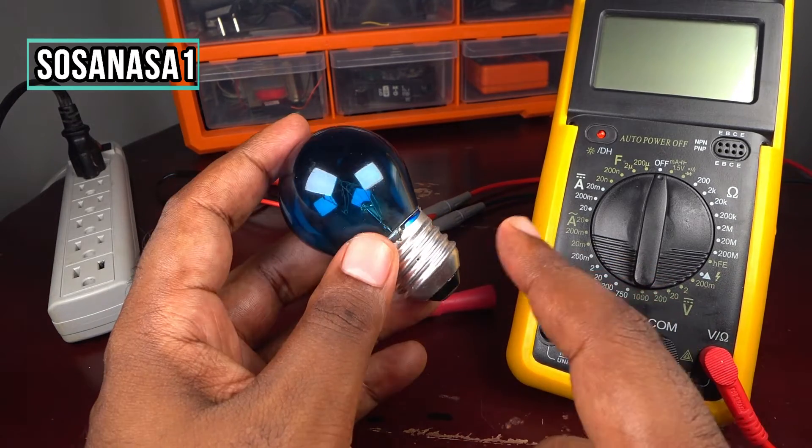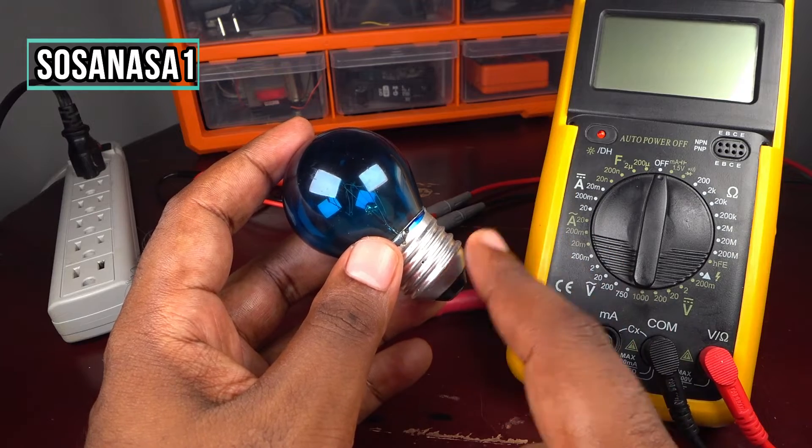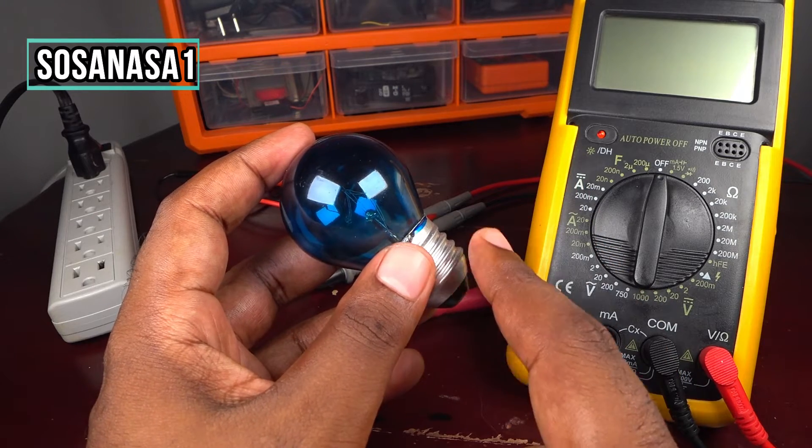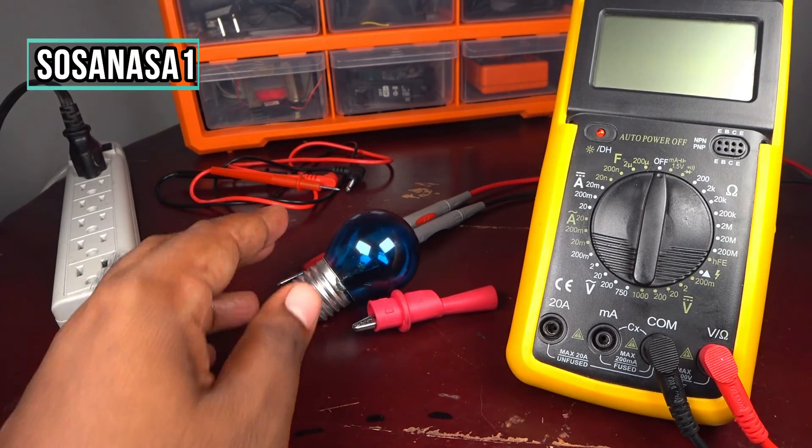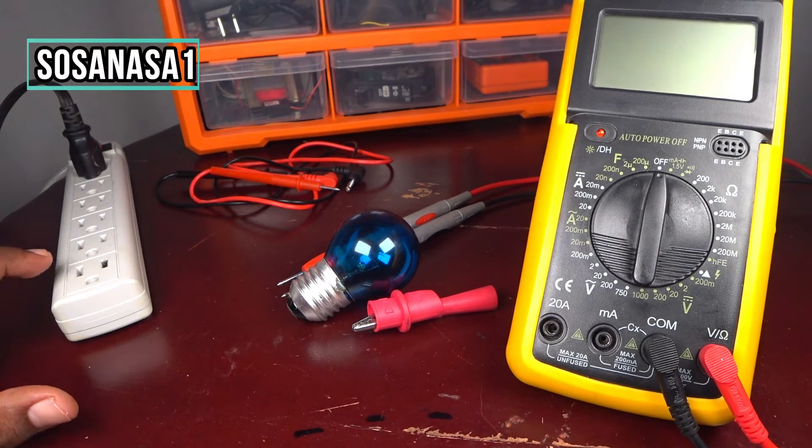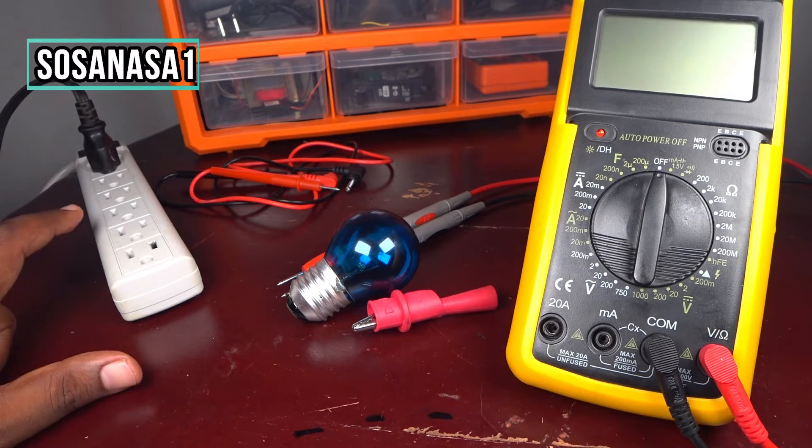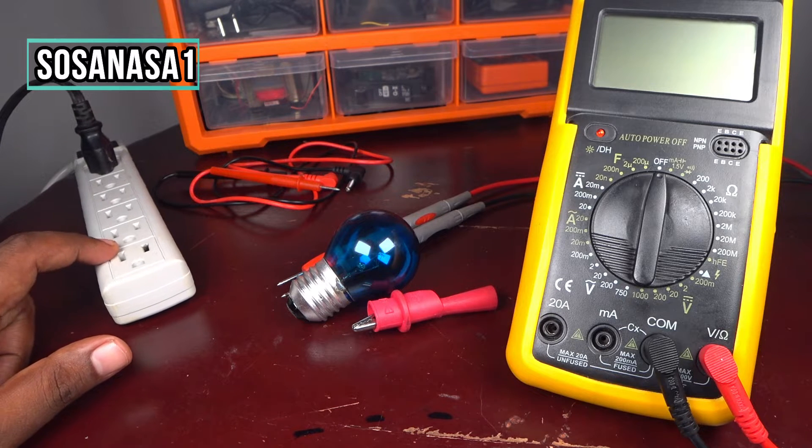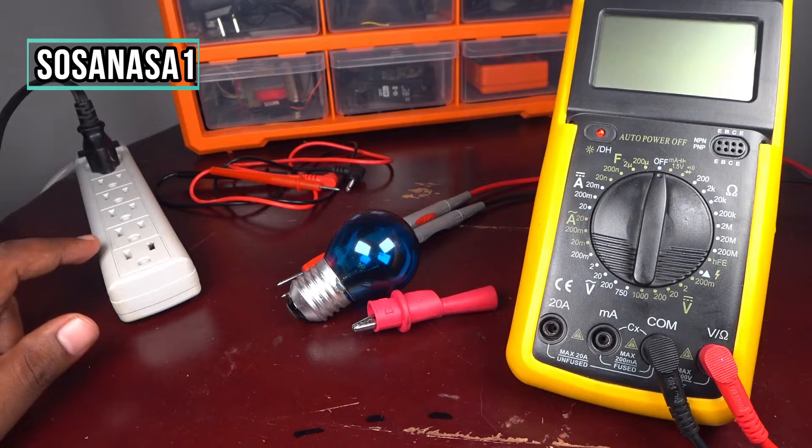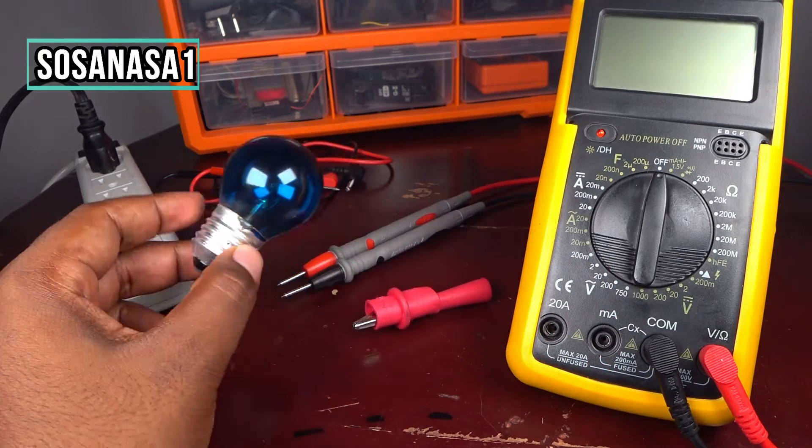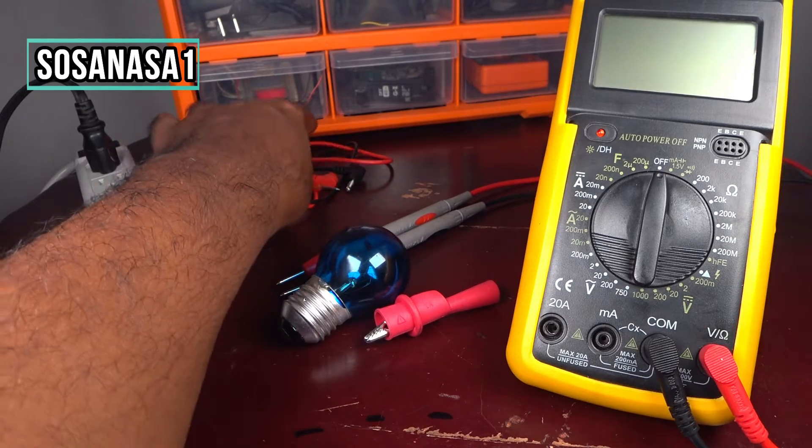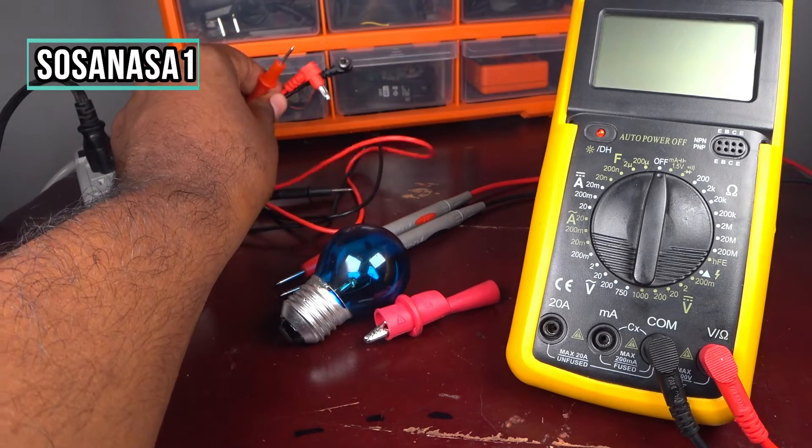For this we need a power outlet like this. This is an alternating current powered outlet, a digital multimeter like this, a light bulb, and these other connection cables.